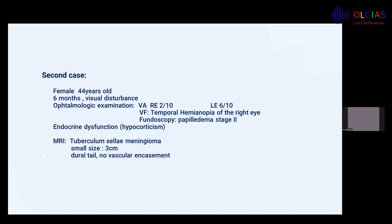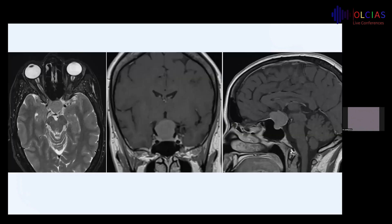The second case is a 44-year-old female complaining for six months of visual disturbance. On ophthalmologic examination, visual acuity was 2/10 on the right and 6/10 on the left. The visual field showed temporal hemianopia of the right eye, and fundoscopy showed papilledema stage 2. She also had endocrine dysfunction — hypocortisolism. MRI showed a tuberculum sellae meningioma, 3 cm, with dural tail, without vascular encasement. MRI views shown on axial, coronal, and sagittal planes.